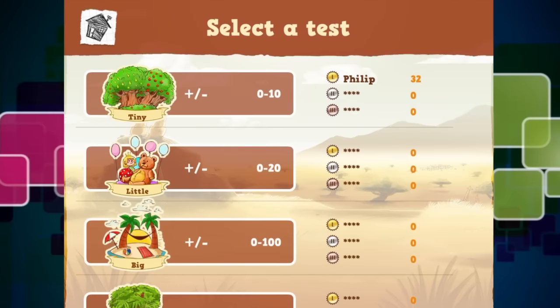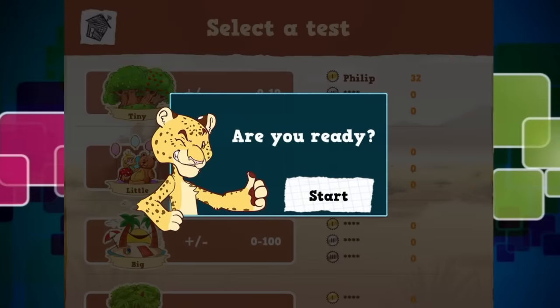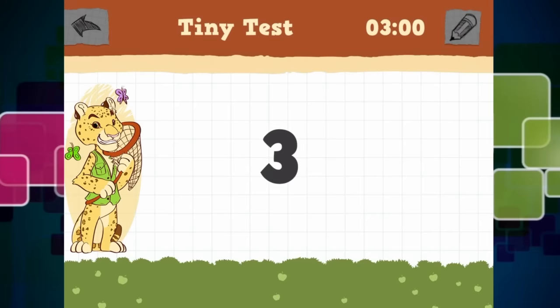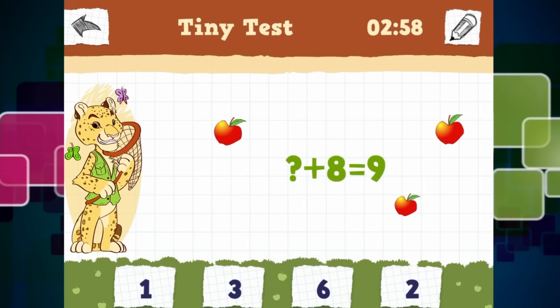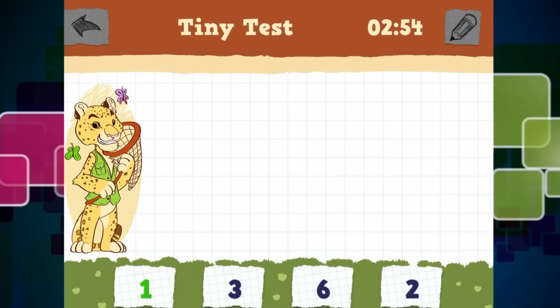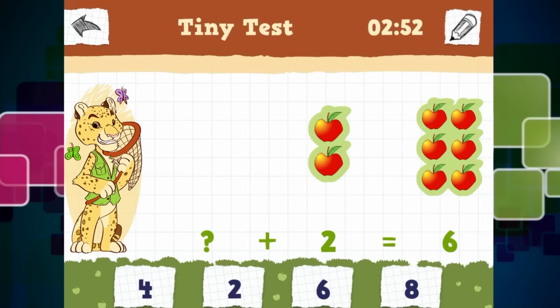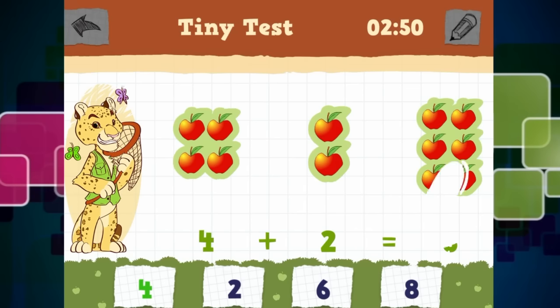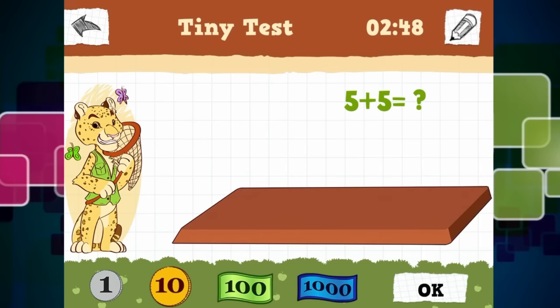So if we just head back to the home page and another aspect of this is taking tests. Tests are good. Yes, they are. So we are going to click on to tiny again. And as you can see, last time I played, I got 32 points, which is pretty good for me. And this is a three minute test. So we have got plus. So eight plus one is nine. Two plus four is six. Five plus five equals ten.